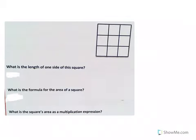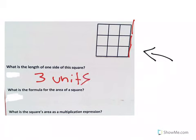This is a little warm up here. If we're looking at this square, which is made up of smaller squares as well, what is the length of one side of the square? Well, you see we have one, two, three of these smaller squares. We don't know how long those are, but we do know there are three. So we're going to say there are three units. It is three units long. If you recall, what is the formula for the area of a square?